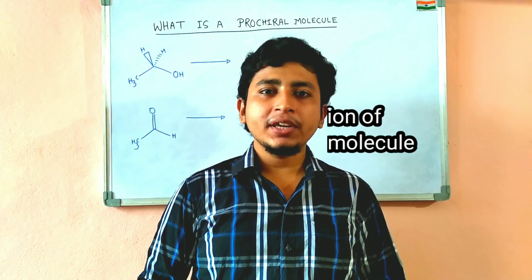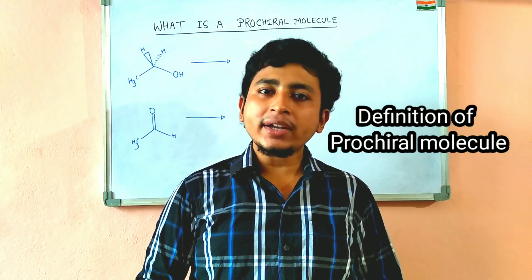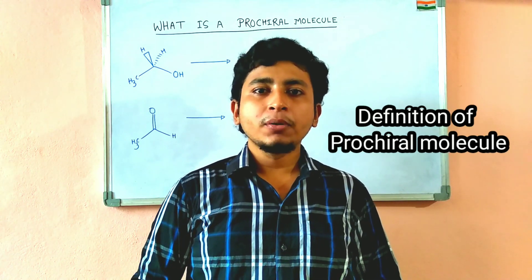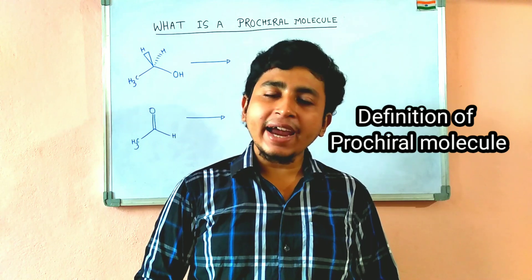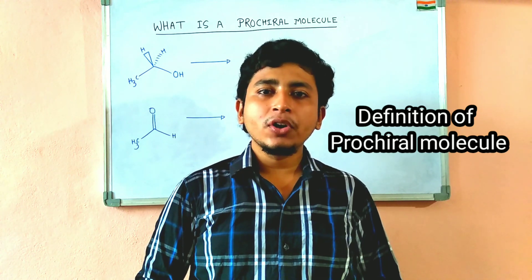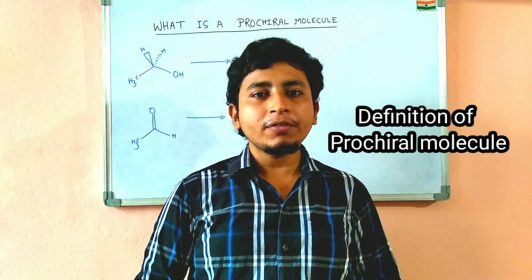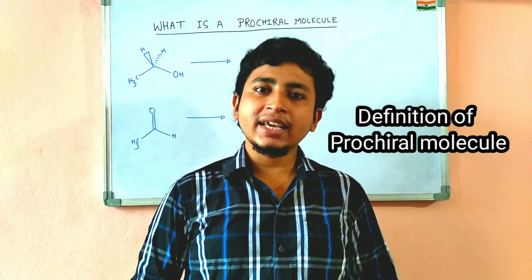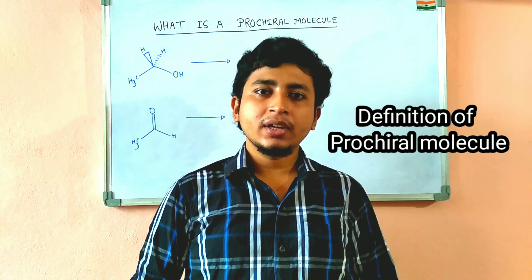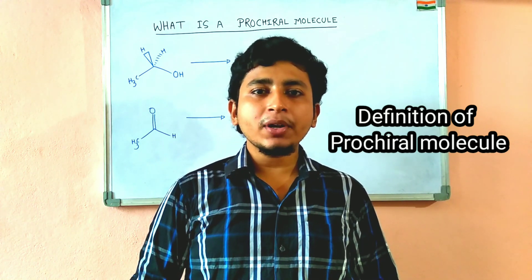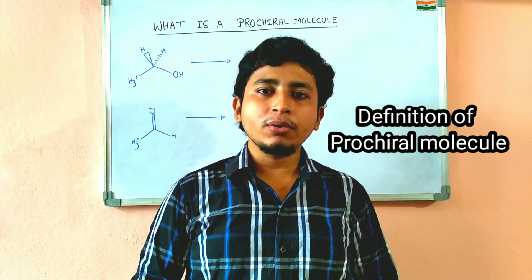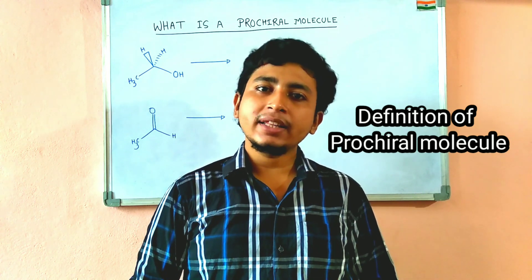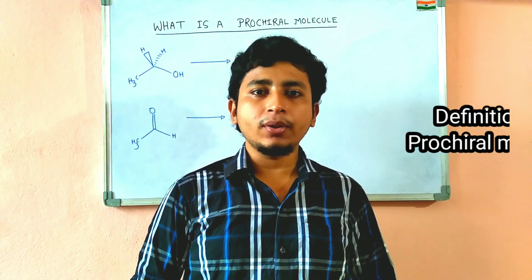We have to understand what is a Prochiral Molecule. A Prochiral Molecule is an achiral molecule which can be converted into a chiral molecule by a single step. Therefore, prochiral molecules are those molecules which are one step behind a chiral molecule.